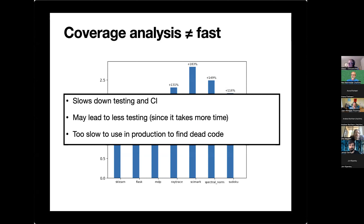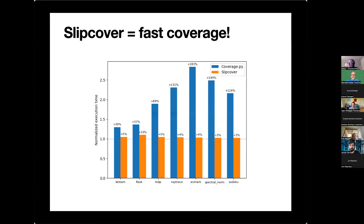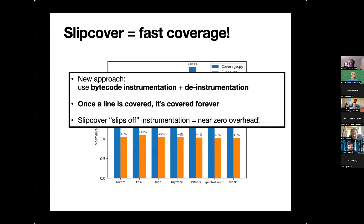So the dream was: what if we could get rid of this overhead? That's what we figured out how to do. So far we're staying around 3–5%, really close to normal execution time. We get this done by using a new approach. Instead of using Python's tracing functionality, we go and instrument the bytecode and also de-instrument it when it's no longer needed. Because once you've hit the line, you know it's been covered. You don't ever need to gather information about it anymore. The overhead slips off.